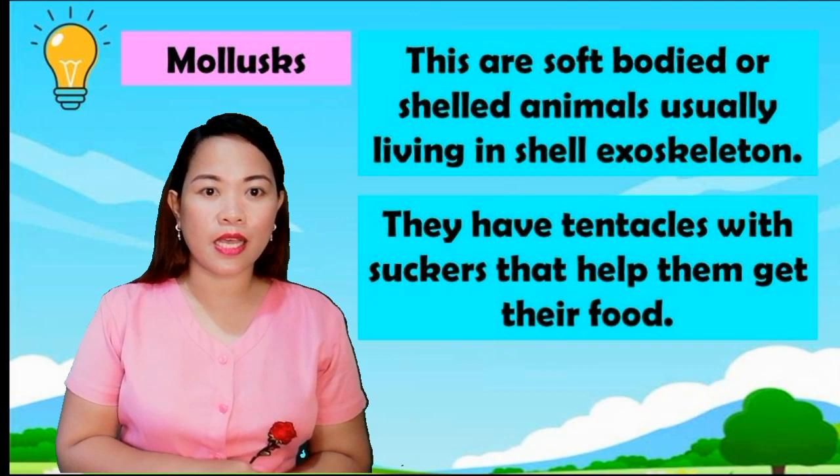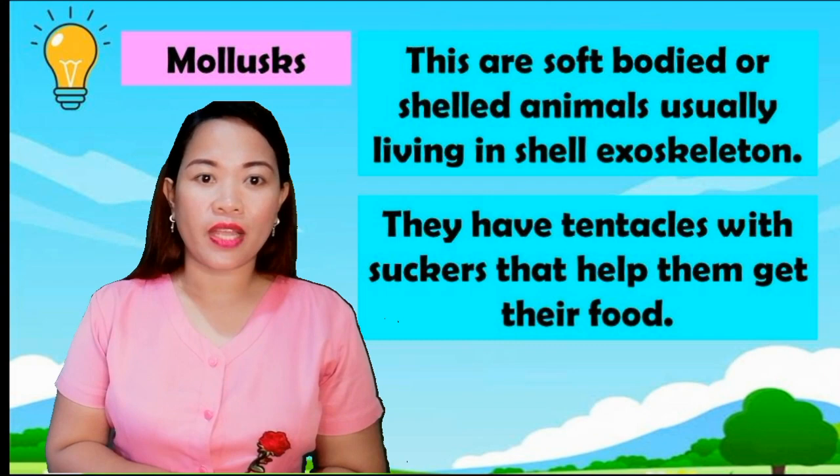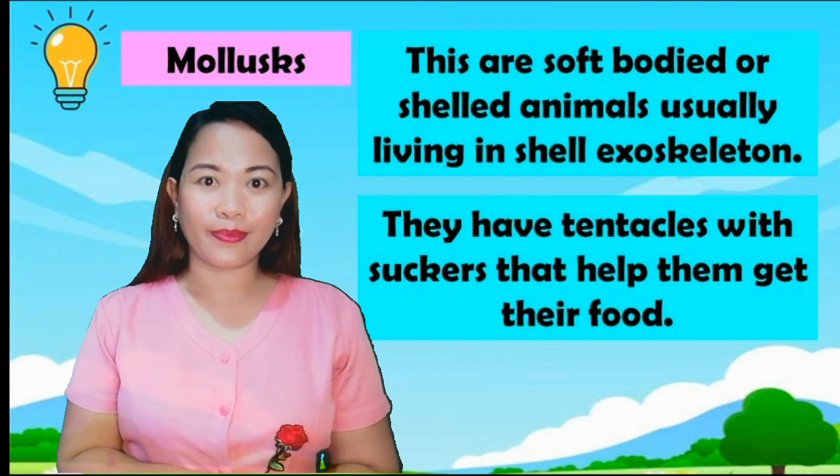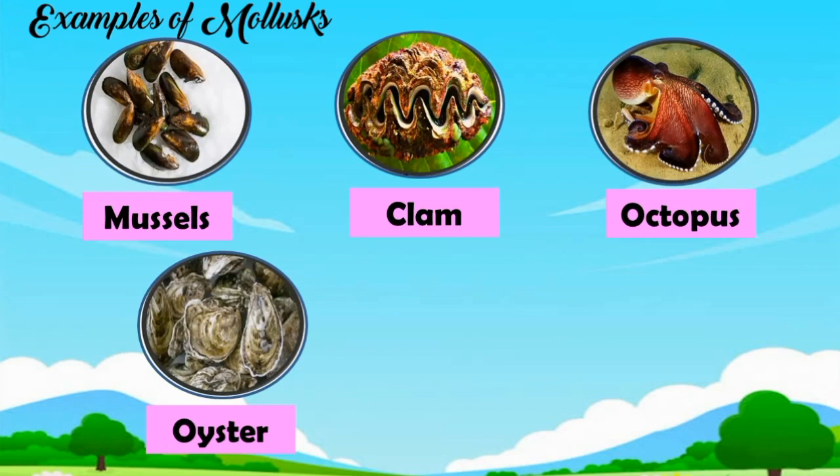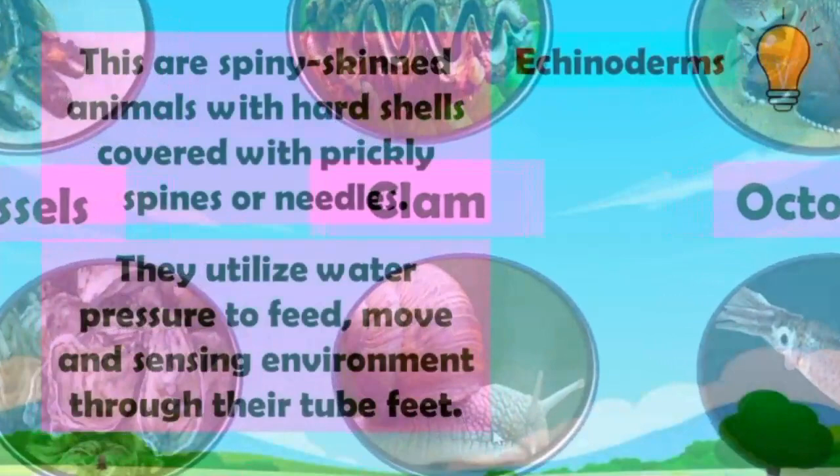Mollusks are soft-bodied animals, usually living in a shell called an exoskeleton. They have tentacles with suckers that help them get their food. Examples of mollusks: mussels, clam, octopus, oyster, snail, squid.